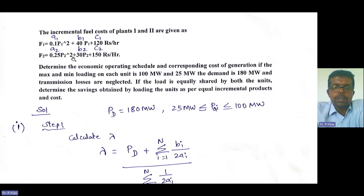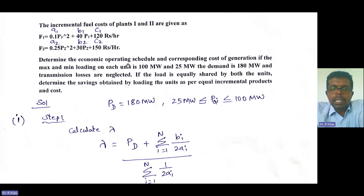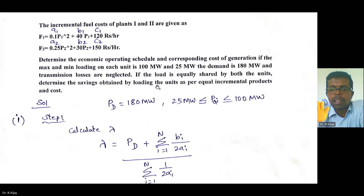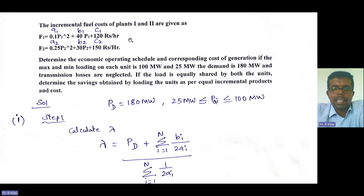F2 is equal to 0.25 P2 squared plus 30 P2 plus 150 rupees per hour. Determine the economic operating schedule and corresponding cost of generation if the maximum and minimum loading on each unit is 100 megawatt and 25 megawatt. Minimum and maximum operating limits are given as 25 megawatt to 100 megawatt. Demand is given as 180 megawatt and transmission losses are neglected.